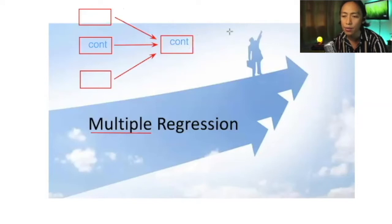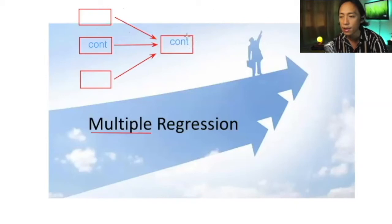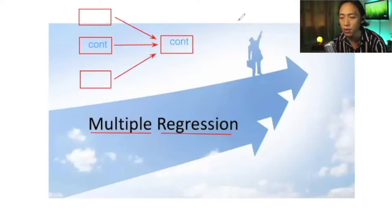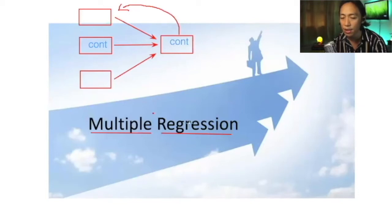One option is to run three separate linear regressions, regressing the dependent variable to each predictor variable. But why is it called regression in the first place? To regress means to move back. It's called regression because essentially what we're trying to do is explain the variance in the outcome variable by examining the predictor variable — to explain this using this. That is the reason why it's called a regression.